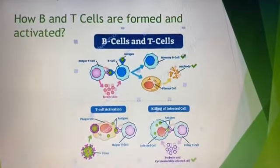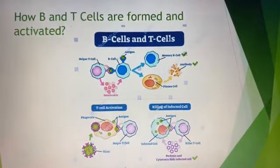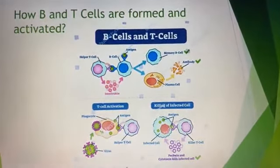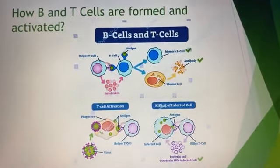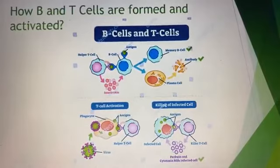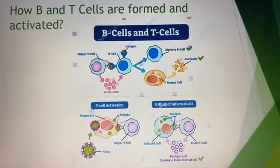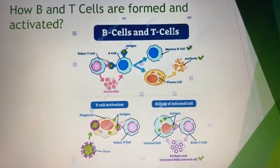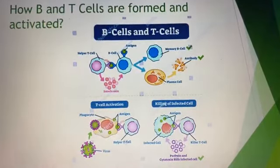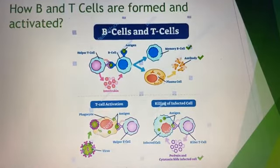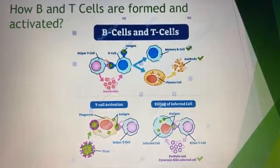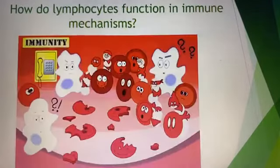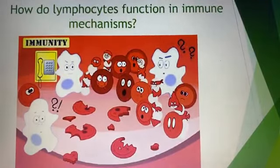B cells are activated by the binding of antigen to receptors on the cell surface, which causes the cell to divide and proliferate. Some stimulated B cells become plasma cells, which secrete antibodies. Helper T cells become activated once they interact with a B cell or with a cytotoxic T cell.